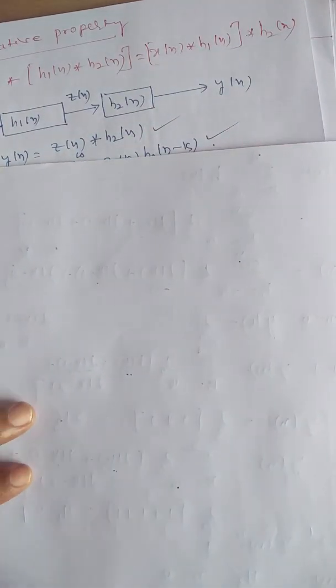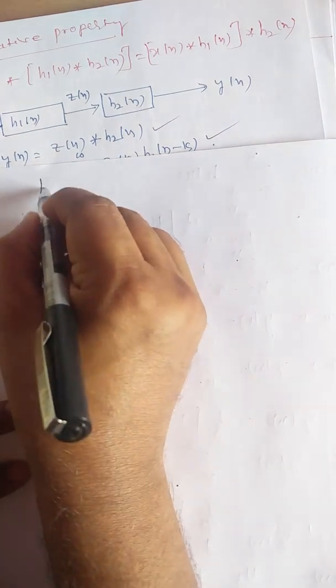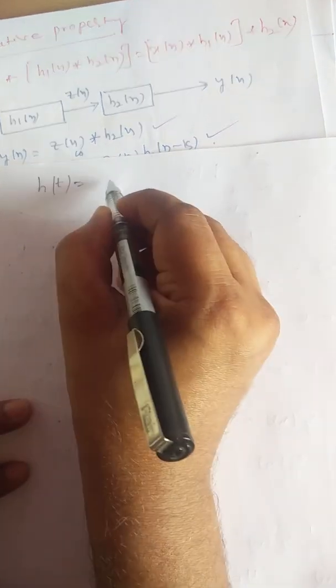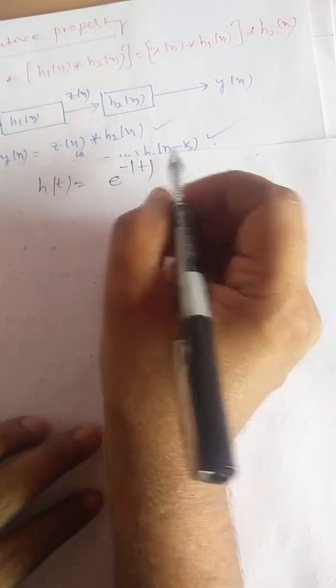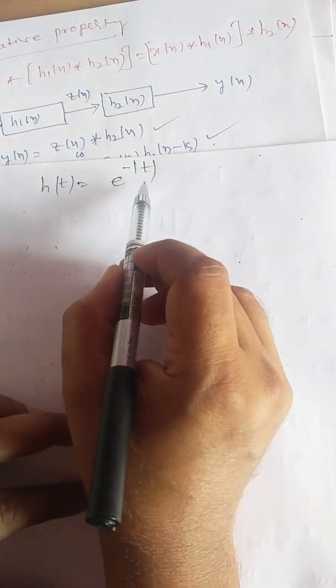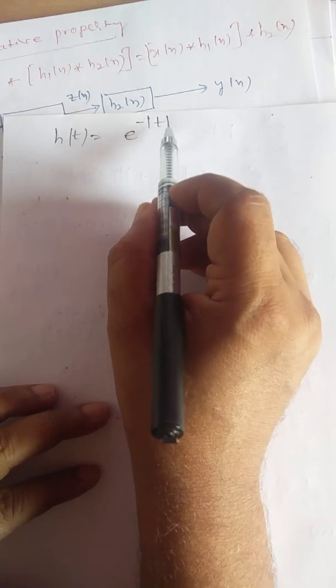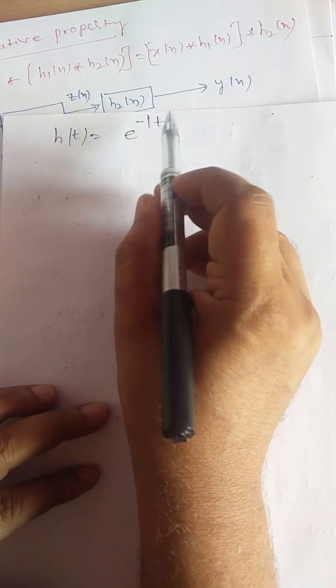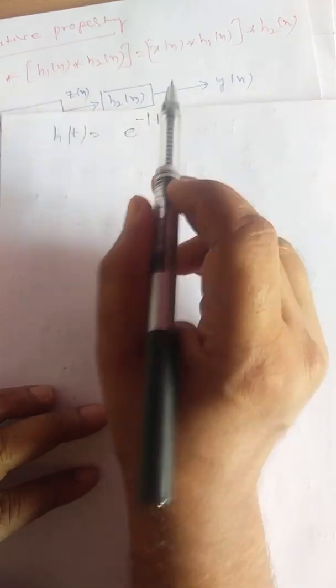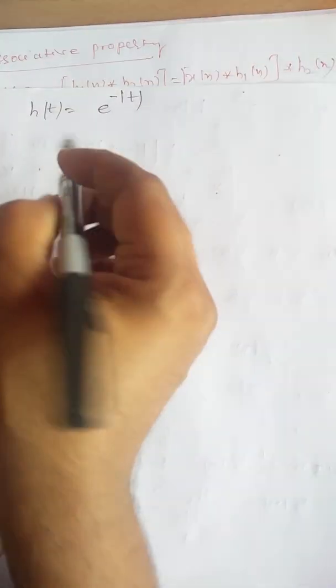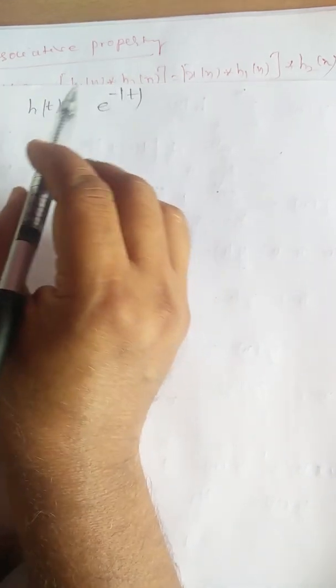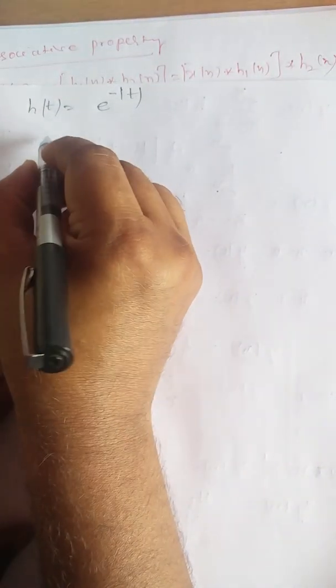Now we go to the next problem: h(t) = e^(−|t|). The modulus of t means −t when t < 0, and +t when t ≥ 0. This is a step response for the continuous-time signal; the input is u(t), and the output y(t) is given by the integral from minus infinity to t of h(τ) dτ.